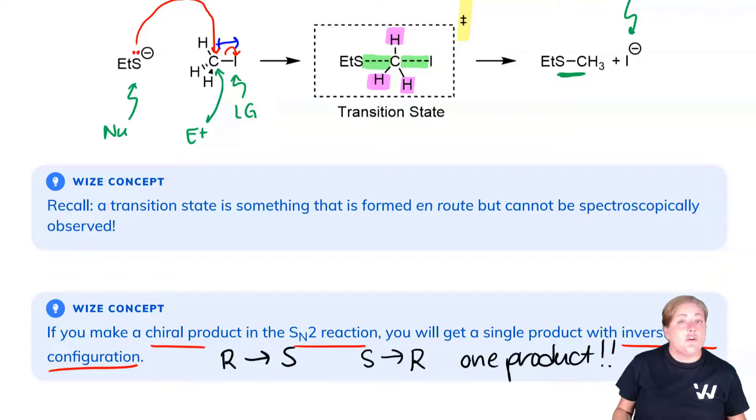So to recap, the SN2 reaction occurs in a single step where the nucleophile attacks the electrophile and the leaving group departs all at once via this crowded transition state. Should we make a chiral product, we only get one and we get it with inversion of configuration.